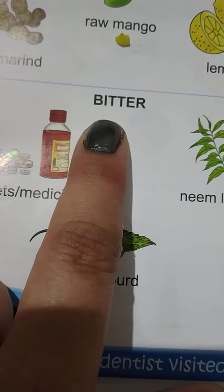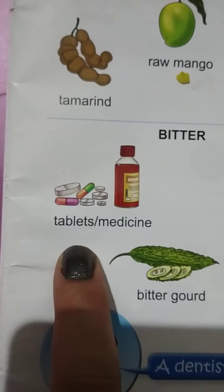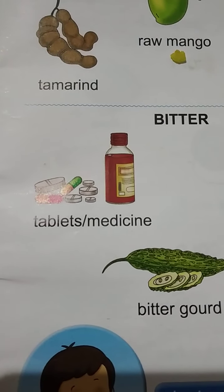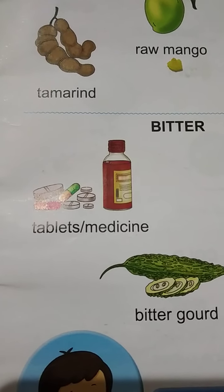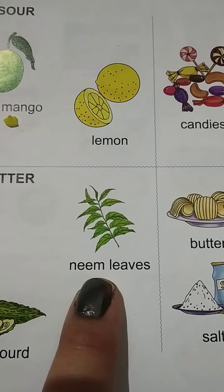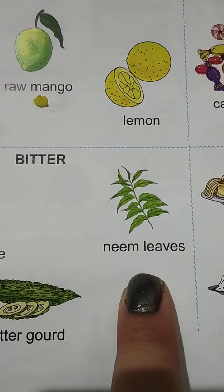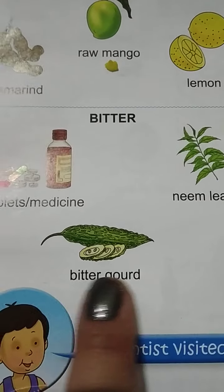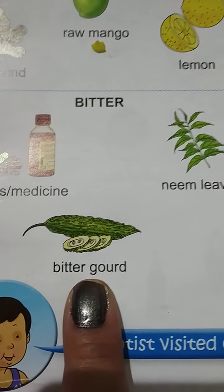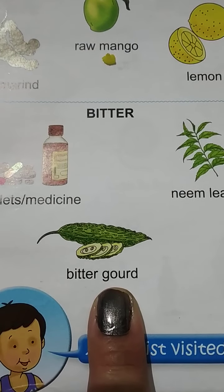Now bitter. Bitter means kadva. Tablets and medicine — jab dawa khate ho, jab bimaar padte ho, doctor ke paas jaate ho, doctor aap ko medicine deta hai na? Medicine ka taste kaisa hota hai? Kadva. Bahut kadvi hoti hai doctor ki medicine. Neem leaves — neem ke jo patte hote hai, woh bhi kadve hote hai. Bitter gourd means karela — it's a vegetable. Karela ka bhi taste kadva hota hai.